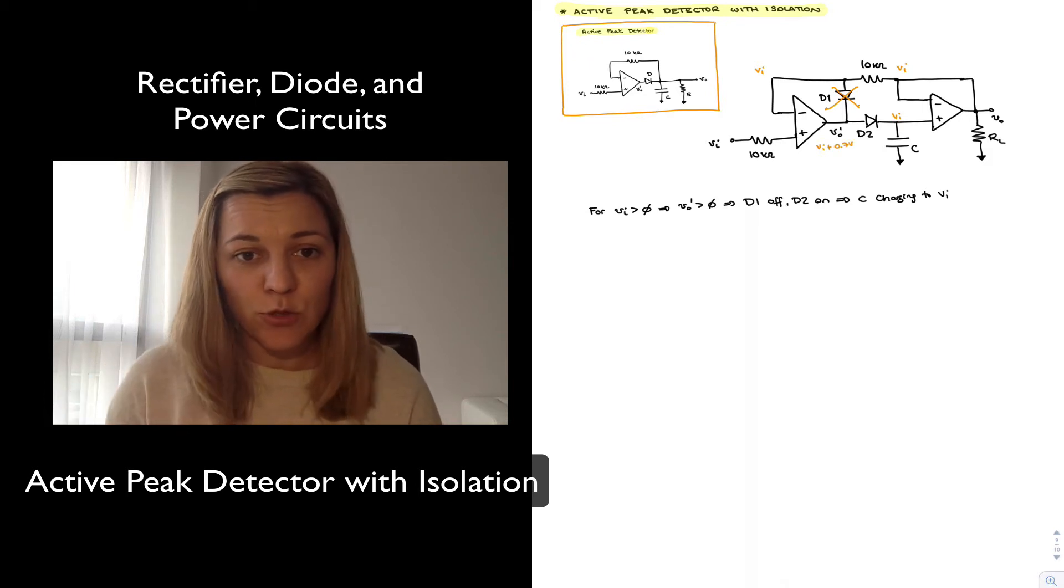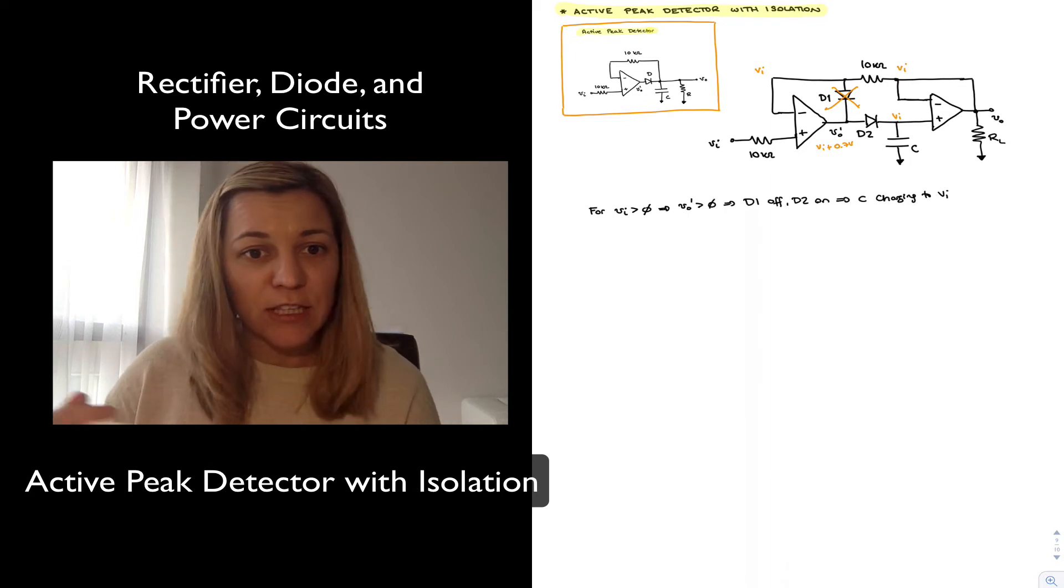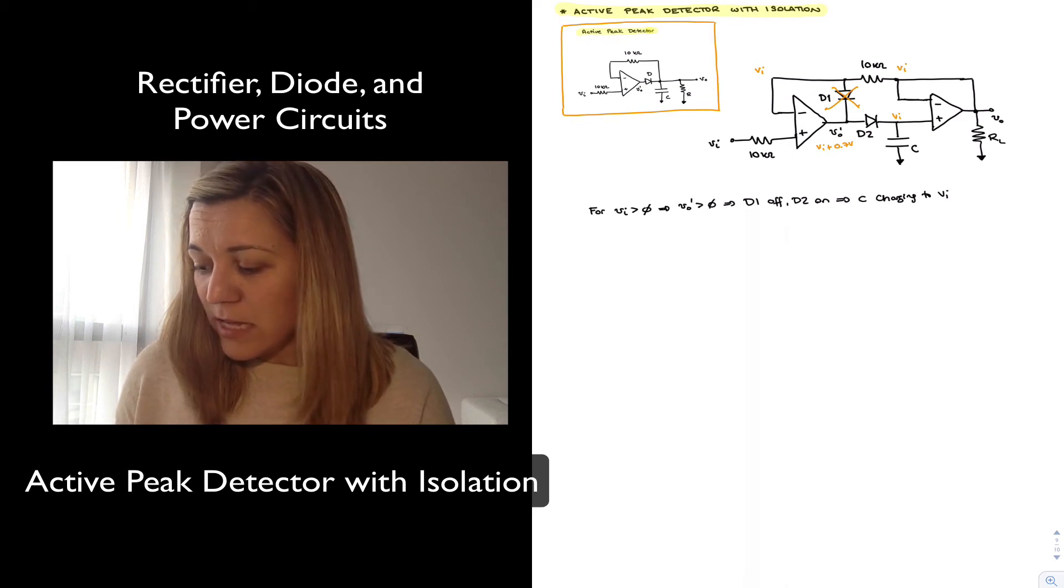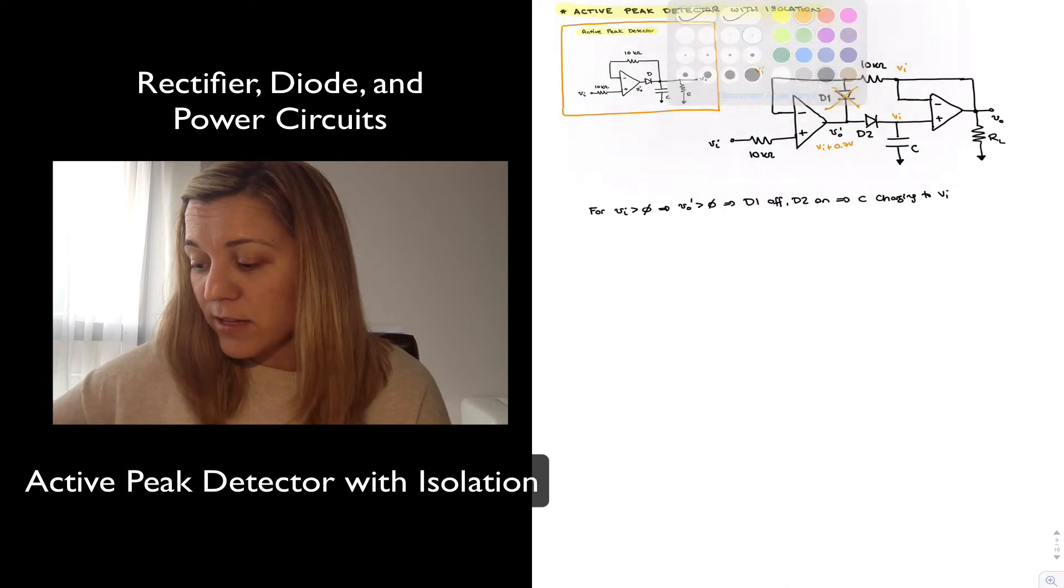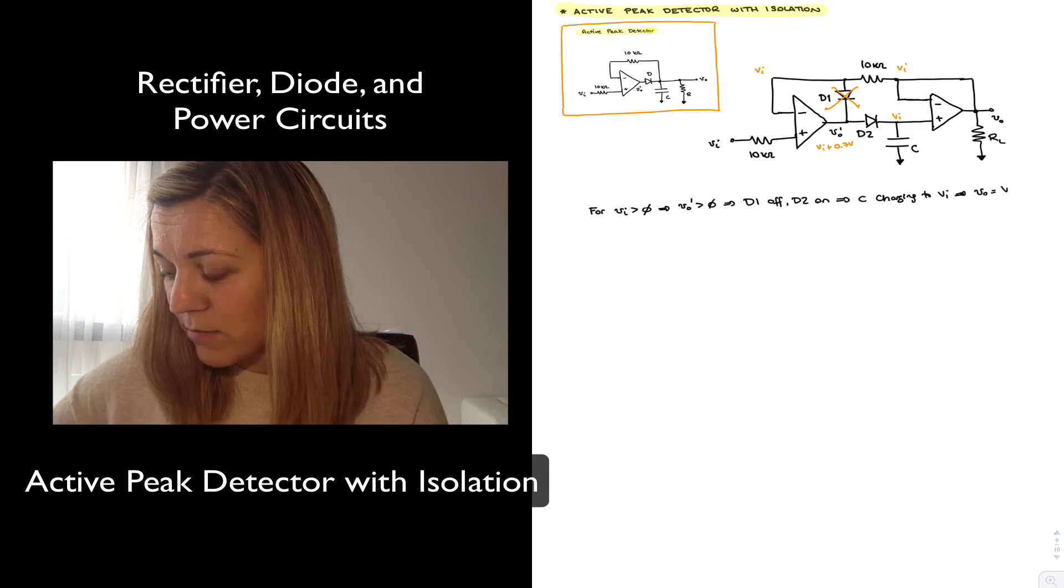So C is charging to Vin, it's going to actually charge to the maximum value of Vin, and so Vout then is going to be equal to my maximum value of Vin.